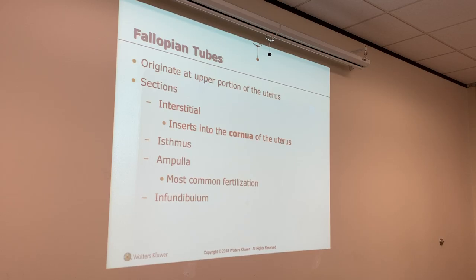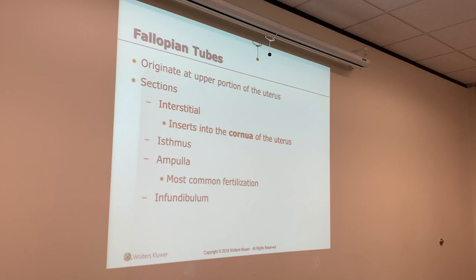Then the ampulla — the ampulla is the widest, most coiled part of the fallopian tubes, and that's where the majority of fertilization happens. And then you have the infundibulum. The infundibulum has fimbriae on the end, kind of like a jellyfish, and they suck the egg up into the fallopian tube. Then little villi carry the egg into the endometrium.